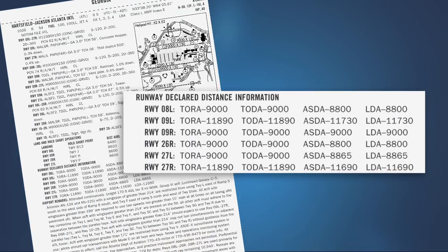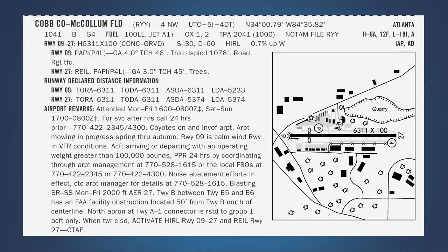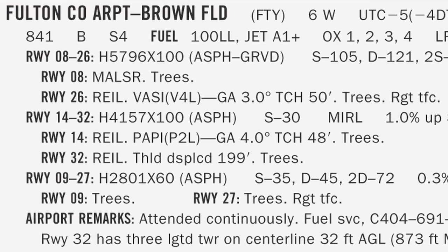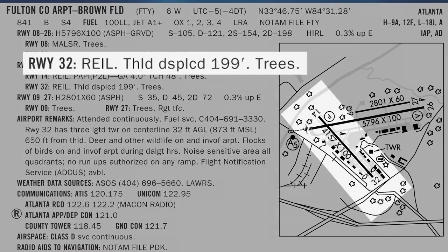Declared distances are published in the FAA Airport Facility Directory for runways where they have been established. In the not-too-distant future, all Part 139 certificated airports, which are those airports with scheduled air carrier operations, will have declared distances published. In some instances, an airport may shorten declared distances for a runway when it is necessary to meet runway design standards. This is the case with Cobb County-McCollum Airport near Atlanta, Georgia. However, there are many runways that do not have declared distances published. For runways without published declared distances, these distances may be assumed to be equal to the physical length of the runway. If the runway has a displaced threshold, then the landing distance available is assumed to be the runway length less the amount of the threshold displacement.